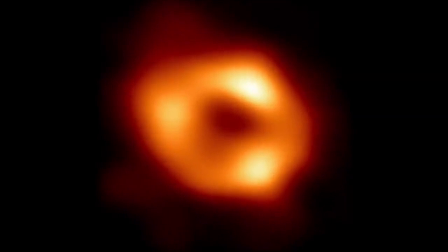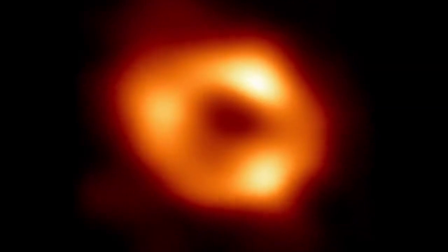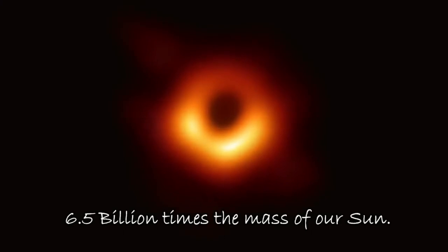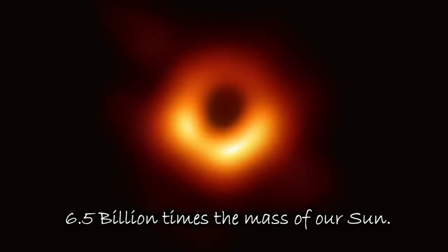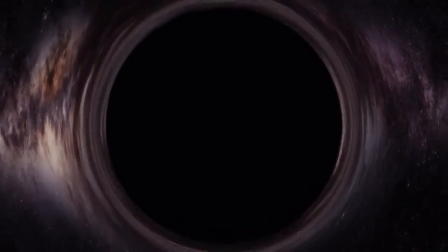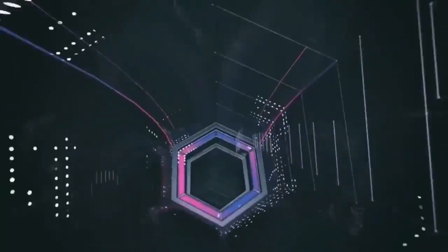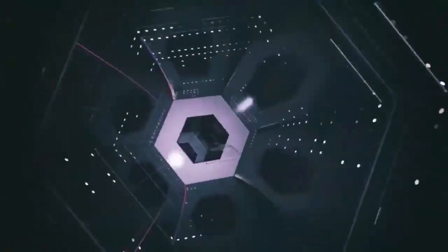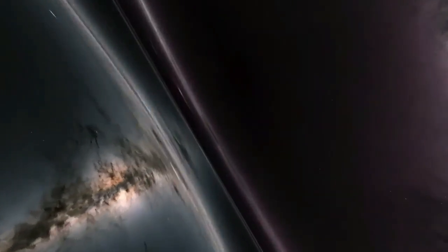The origins of black hole theories can be traced back to the 18th century when John Mitchell, an English astronomer, proposed the existence of objects with strong gravitational fields capable of trapping even light. It wasn't until the 20th century when scientists like Stephen Hawking developed a comprehensive understanding of black holes and their properties.